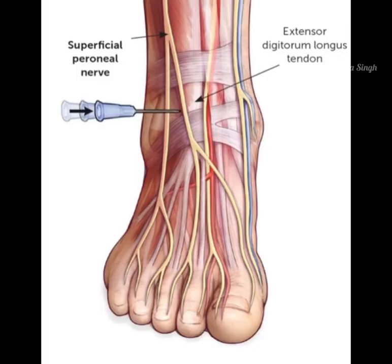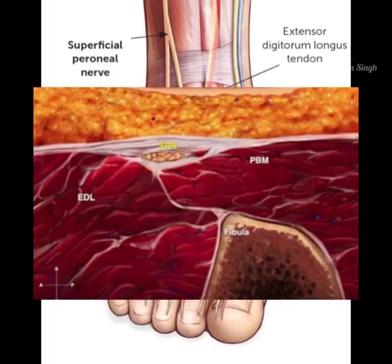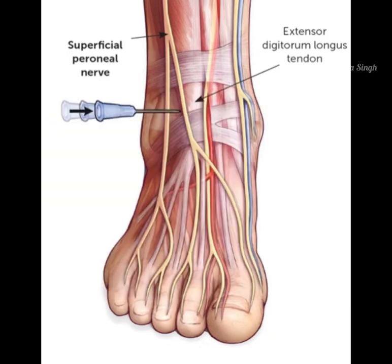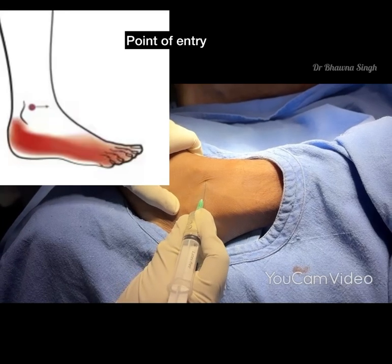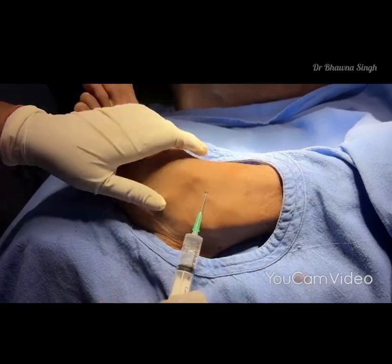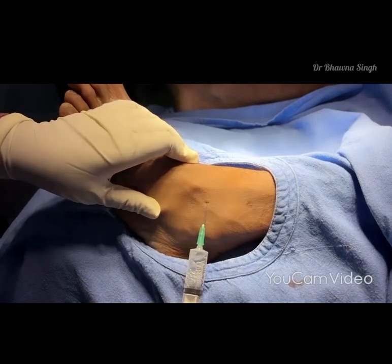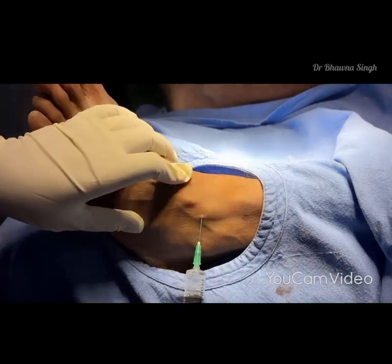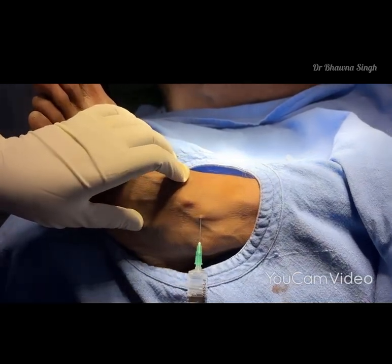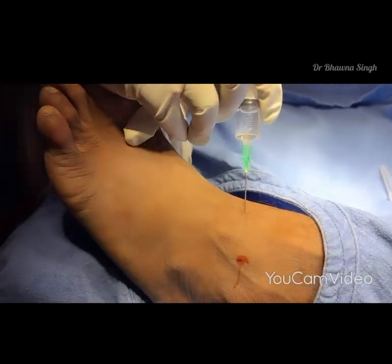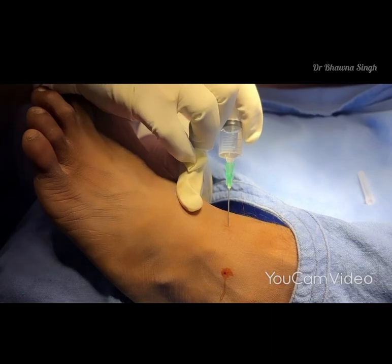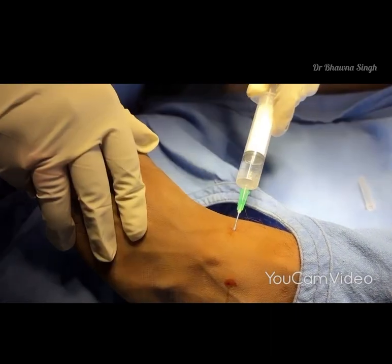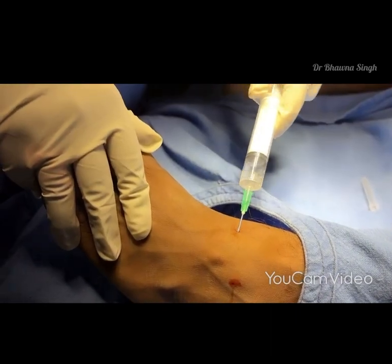The superficial peroneal nerve runs subcutaneously on the anterolateral side of the ankle, just lateral to the extensor digitorum longus tendon. Insert the needle over the lateral malleolus and tunnel the needle subcutaneously towards the extensor digitorum longus, giving five to seven milliliters of local anesthetic between these two points in a band-like pattern. The entry point for the deep peroneal nerve block can also be used here.